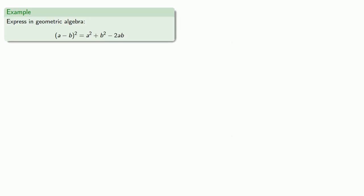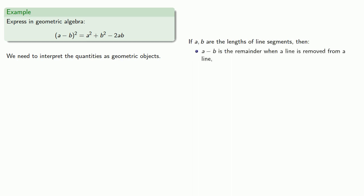For example, we might try to express the identity in geometric algebra: A minus B squared is A squared plus B squared minus 2AB. And so we need to interpret the quantities as geometric objects. If A and B are the lengths of line segments, then A minus B, well, we can view that as the remainder when a line is removed from a line. A squared is the square on the original line. And likewise, B squared is the square on the line removed. And AB is the rectangle with sides A and B.